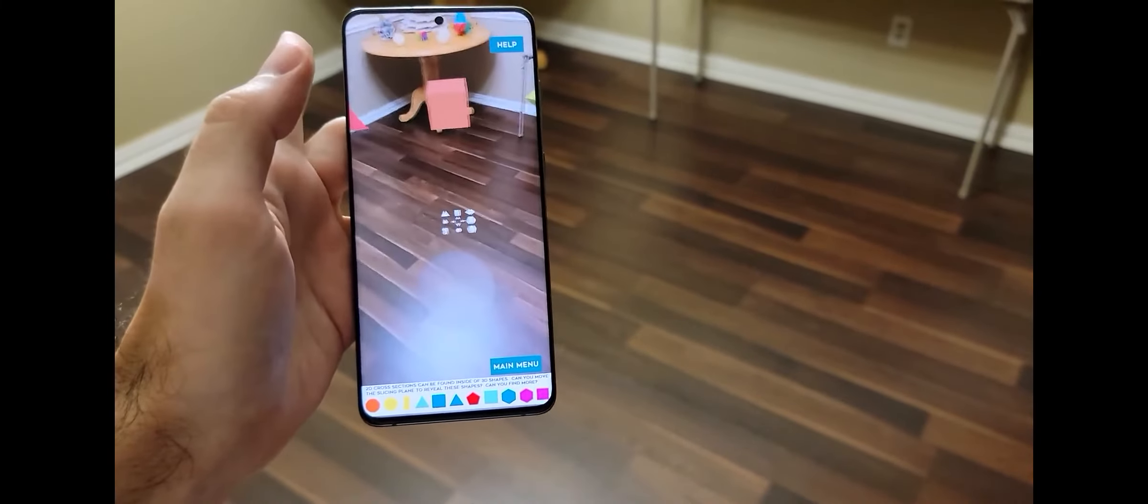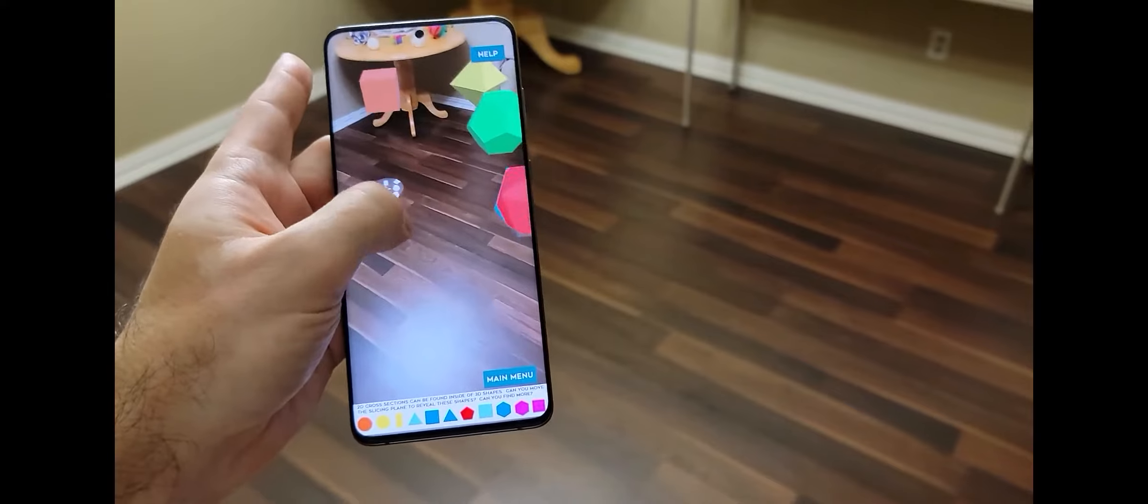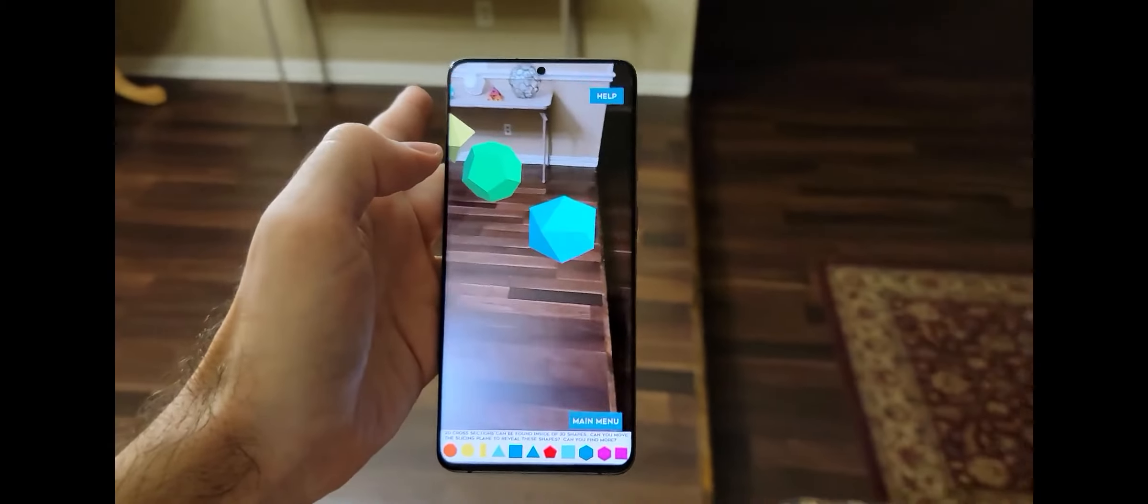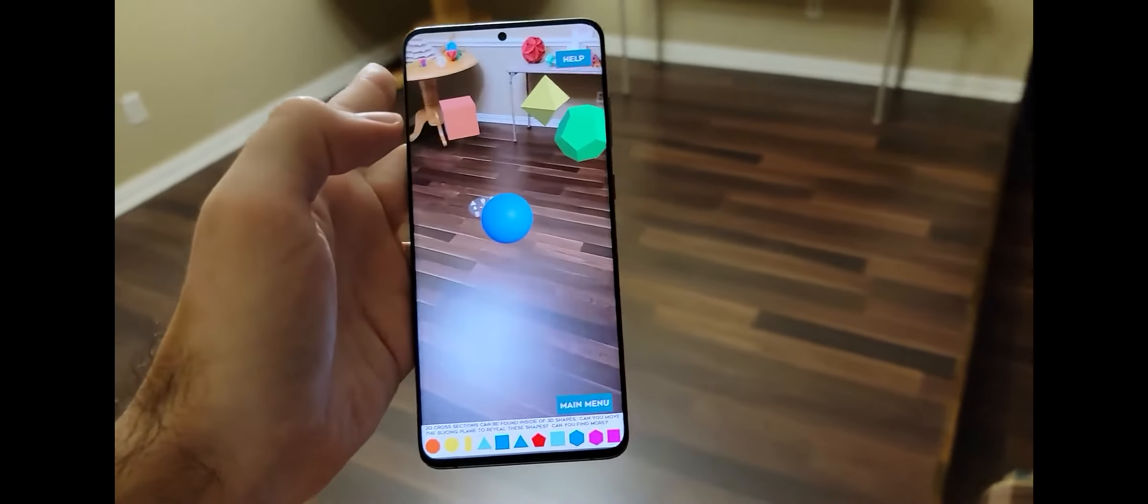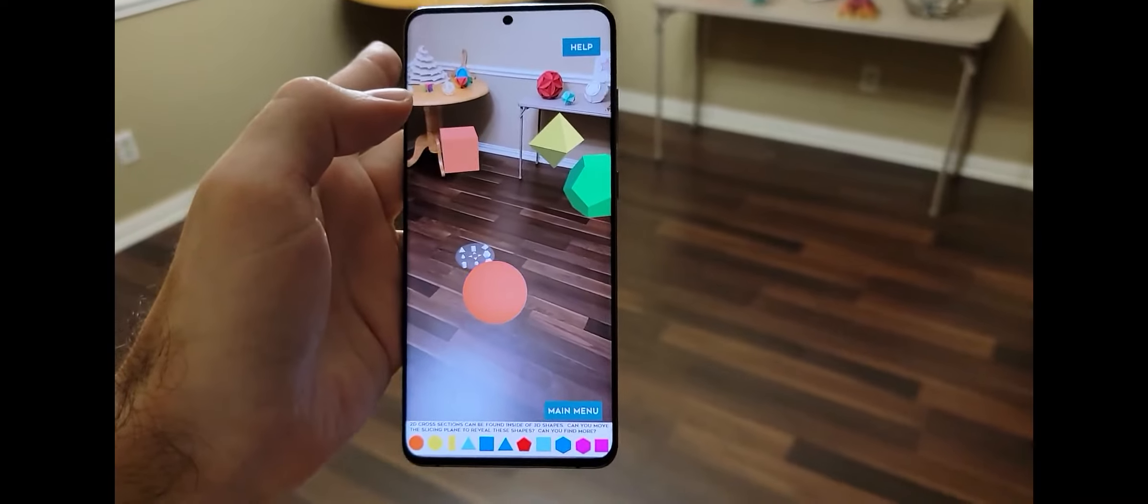And then pinch to zoom. Two finger pinch to zoom. Tap and drag to translate. Now the object that's translated is a set of 3D objects. Very colorful. Let's see how we can interact with those.